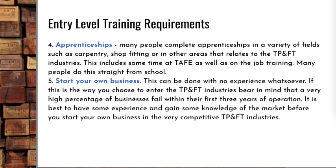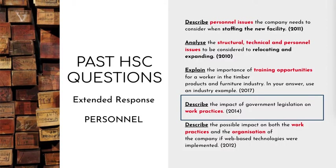However, statistically speaking, if you just start a business without formal qualifications, you're more likely to have it fail within the first three years. So there you have it — a quick overview of industrial relations, government legislation, policies and procedures that impact on the industry, and some of the different ways you can get a job. There are a couple of exam questions here; I'd recommend you have a look at the one on government legislation and how it's changed the work being done. Thank you.